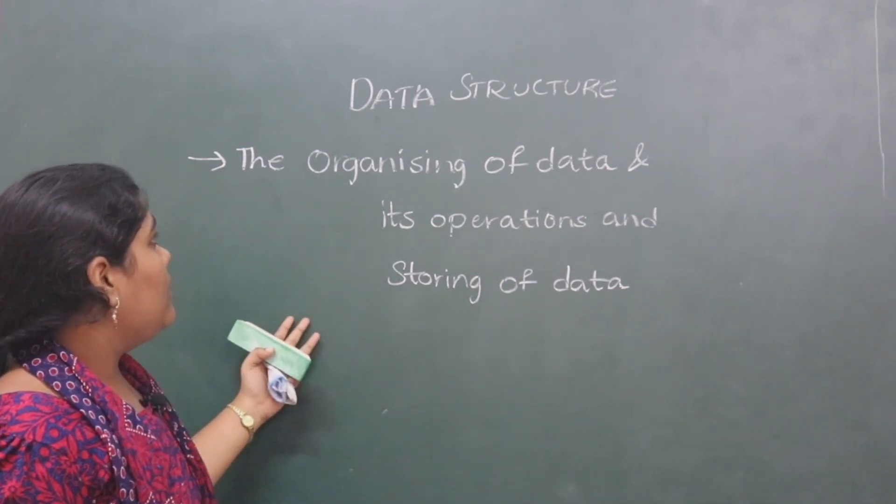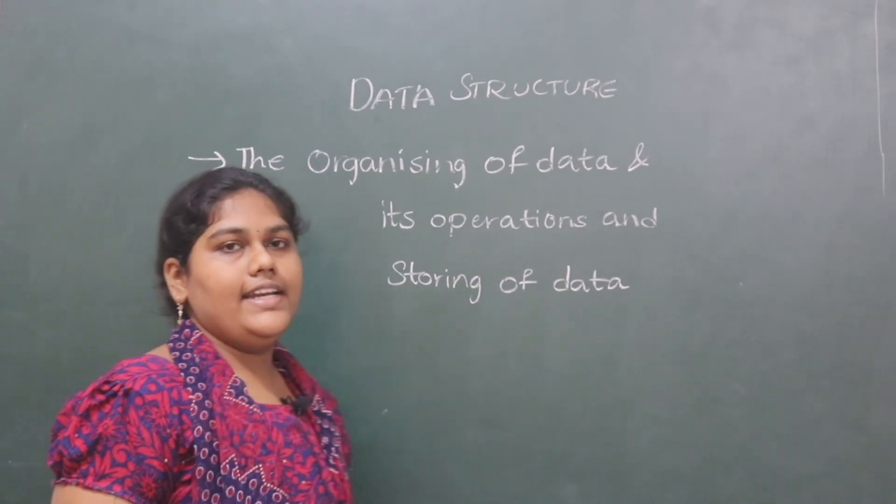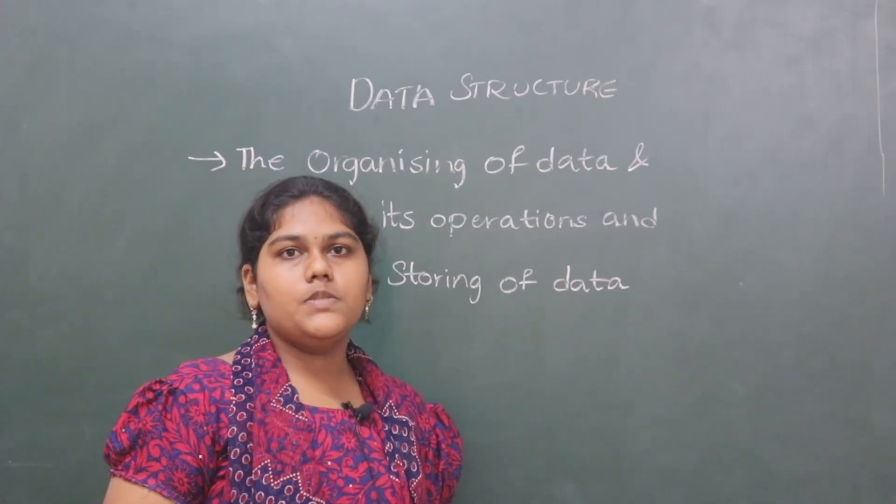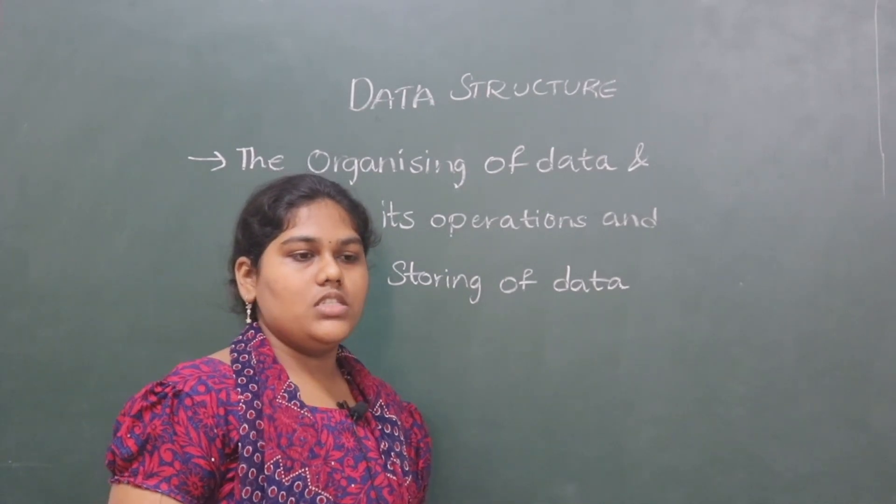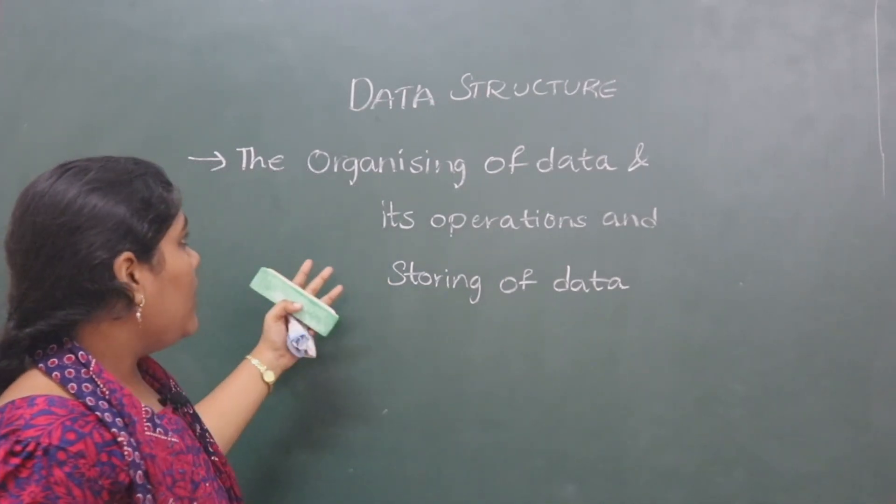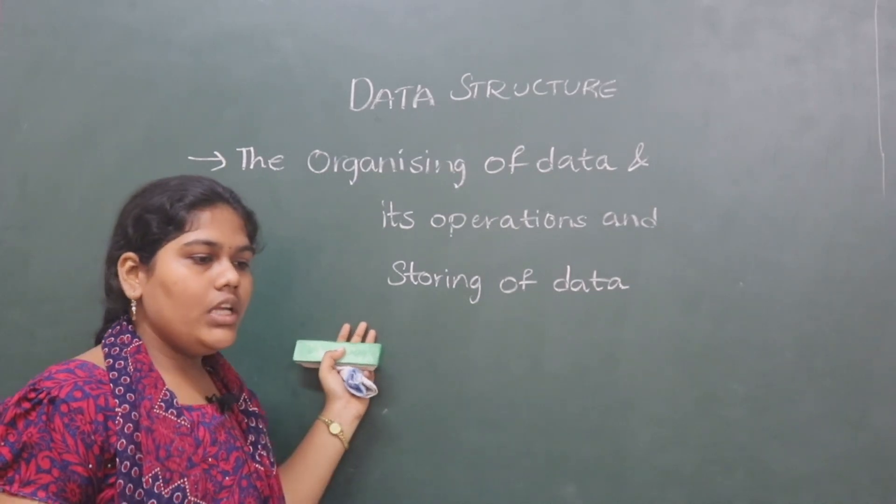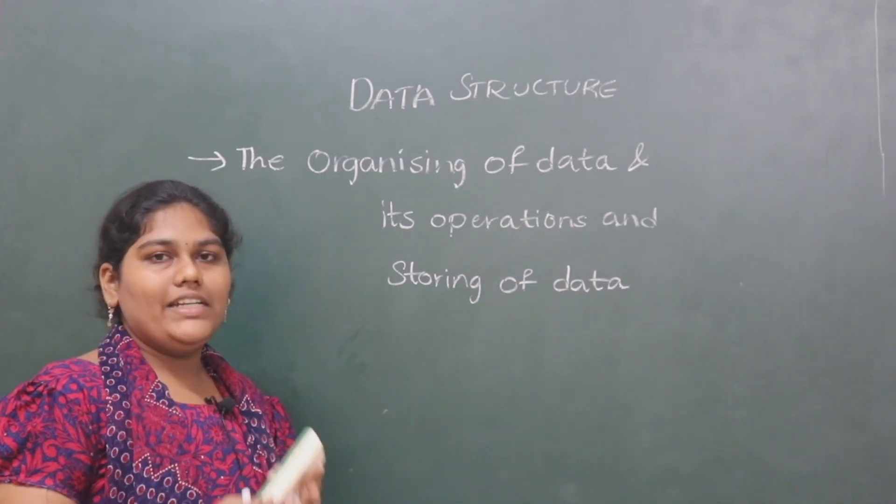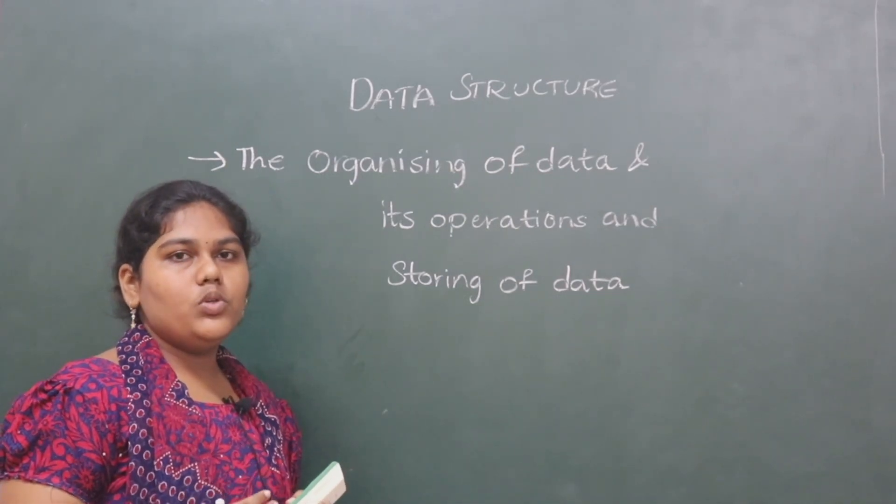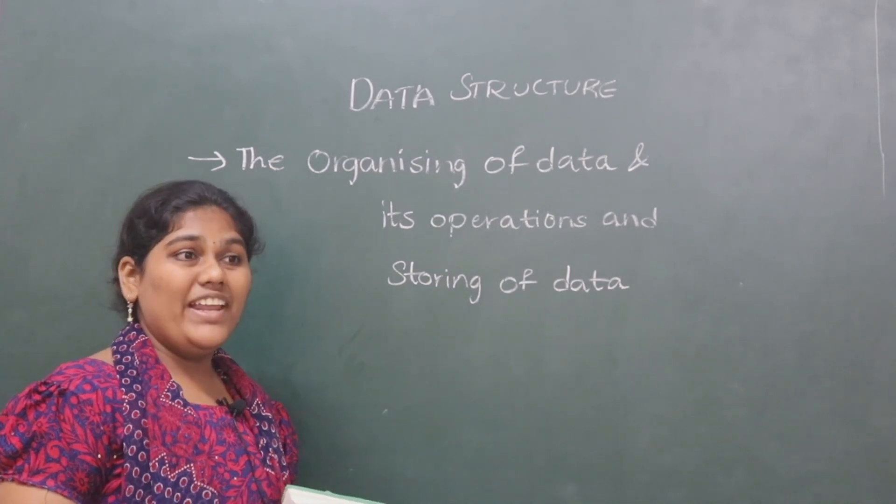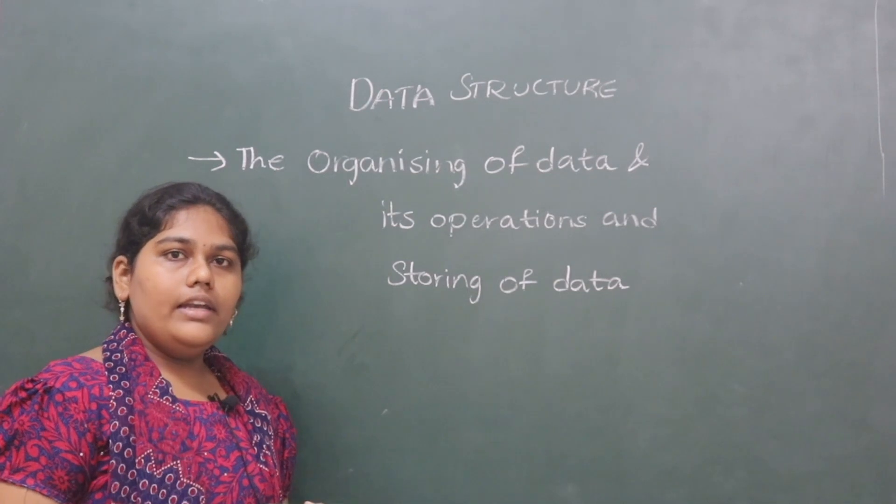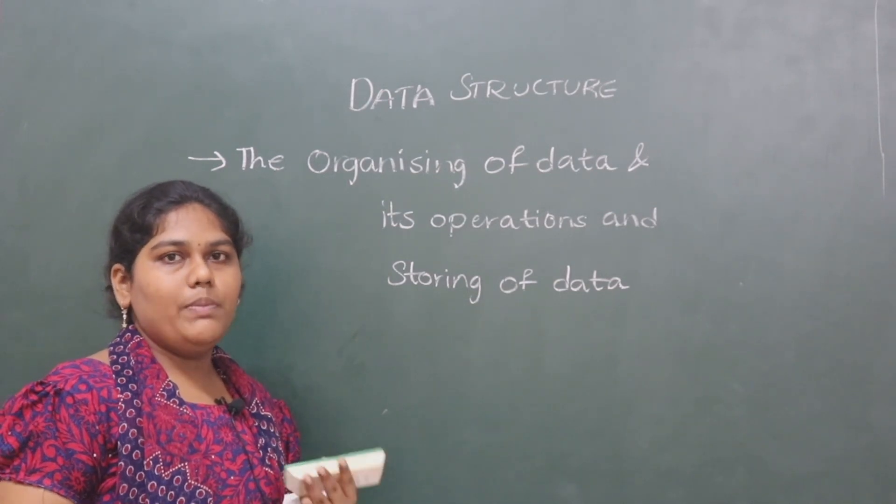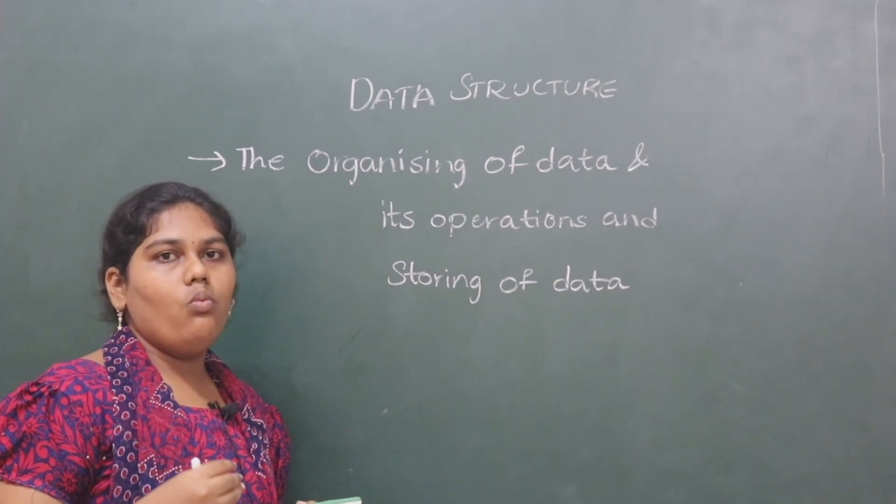Let's see why we need data structures - it's for the processor's speed. To maintain the speed of the processor we need data structures. How? Because when we organize the data into a particular way, it makes the system easily search or merge or do any modifications easily. It gives the processor speed up and makes its work easier.